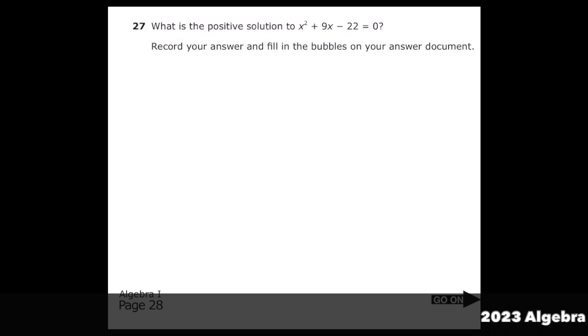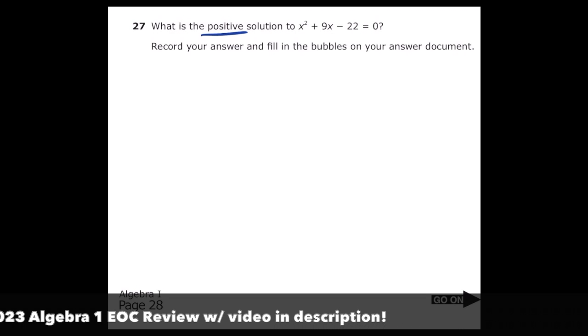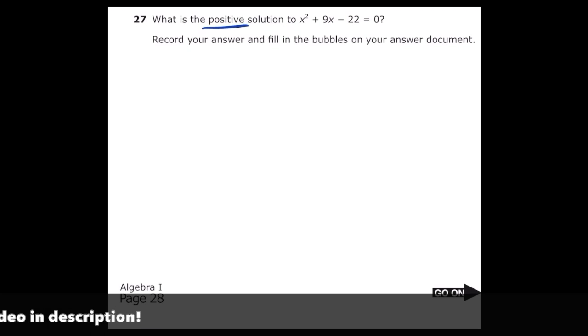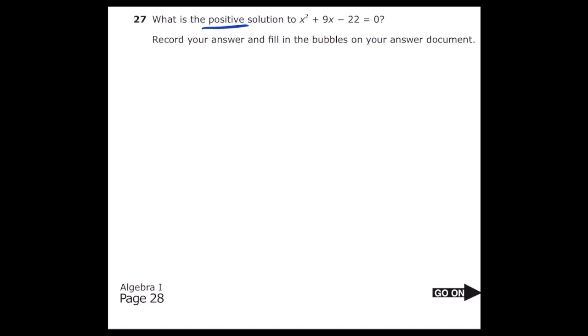This is number 27 from the 2022 Algebra 1 EOC. What is the positive solution to x squared plus 9x minus 22 equals 0? We're going to go ahead and factor this out and so I know that I need two numbers that multiply to negative 22 and add to 9. I'm going to put in my x in both sets of parentheses because I know that x times x is going to equal x squared.